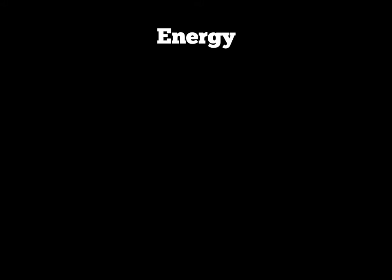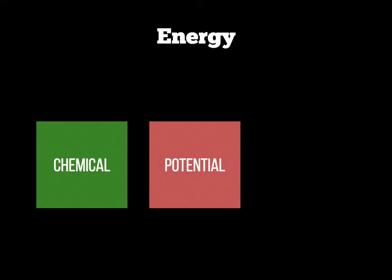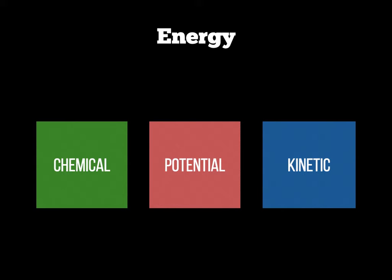We have three forms of energy you need to understand for your OCR exams. Chemical energy, which is the energy stored within bonds of chemical compounds. Potential energy, which is stored energy by the body that's ready to be used when we need it. And kinetic energy, which is energy in the form of muscle contraction or joint movement. Please make sure you revise this slide and write down the definitions.